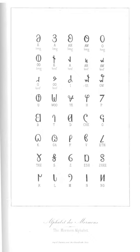The Deseret Alphabet is a phonemic English language spelling reform developed between 1847 and 1854 by the Board of Regents of the University of Deseret under the leadership of Brigham Young, the second president of the Church of Jesus Christ of Latter-day Saints. George D. Watt is reported to have been the most actively involved in the development of the script, as well as being its first serious user. In public statements, Young claimed the alphabet was intended to replace the traditional Latin alphabet with an alternative, more phonetically accurate alphabet for the English language. This would offer immigrants an opportunity to learn to read and write English, the orthography of which is often less phonetically consistent than those of many other languages.